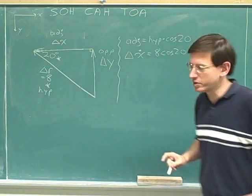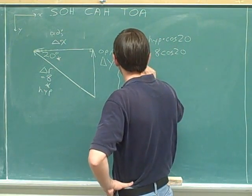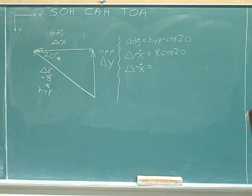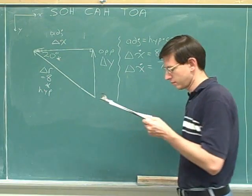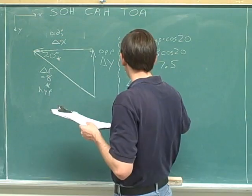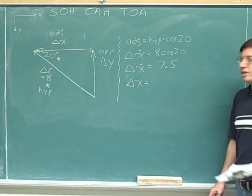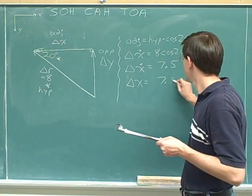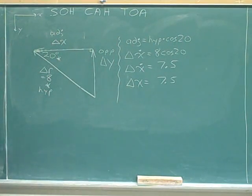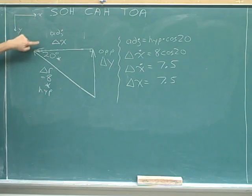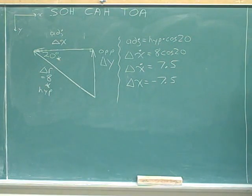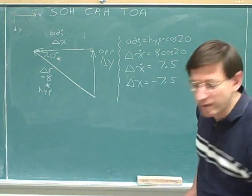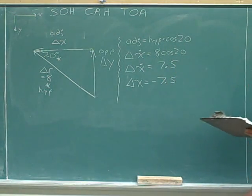We're dealing with delta X with a dot — we're still finding the magnitude. 8 times the cosine of 20 is 7.5. But this is not a good final answer. For our final answer, we have to show the displacement including the sign, without the dot. We've chosen right as our positive X direction, but delta X is to the left — the negative direction. So the X component of the displacement is negative 7.5, probably negative 7.5 meters.